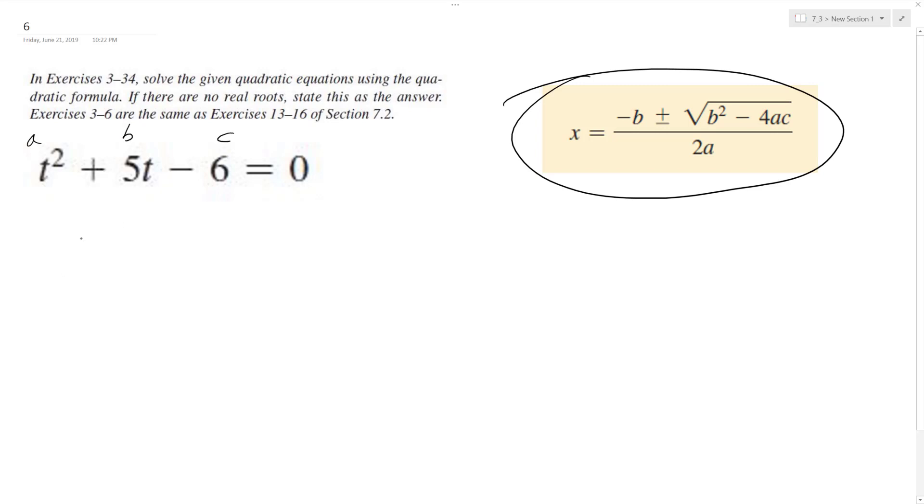All right, so B is going to be 5 plus, excuse me, negative 5, opposite, plus or minus square root of B squared, which is going to be 25, minus 4 times A, which is 1, times C, which is negative 6, all over 2 times A, which is just 1.